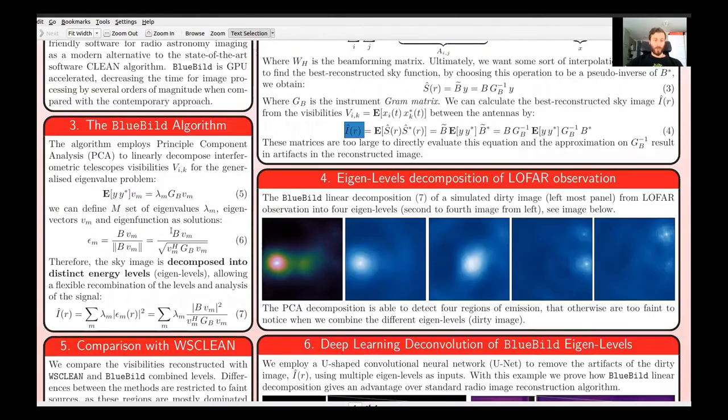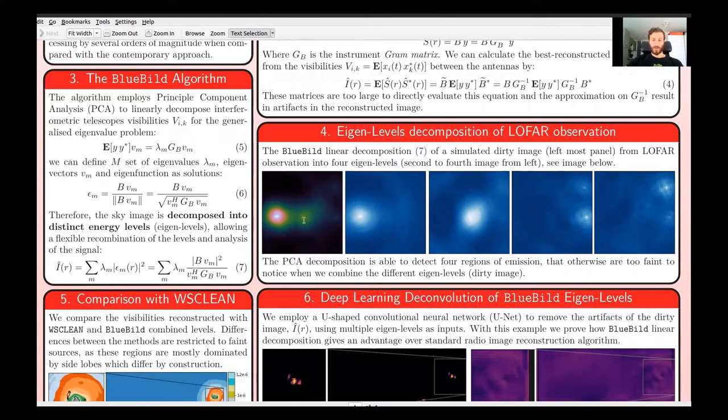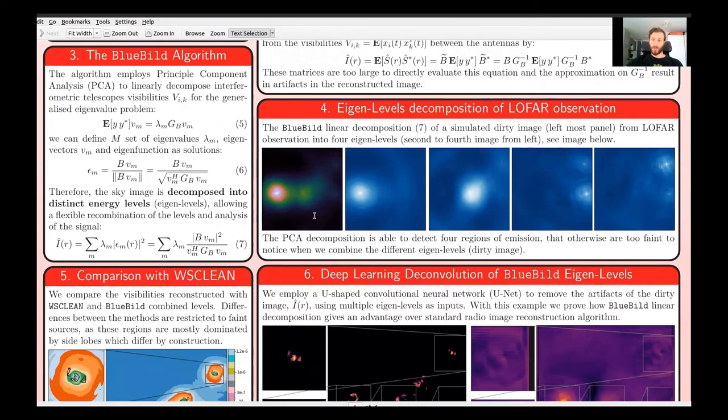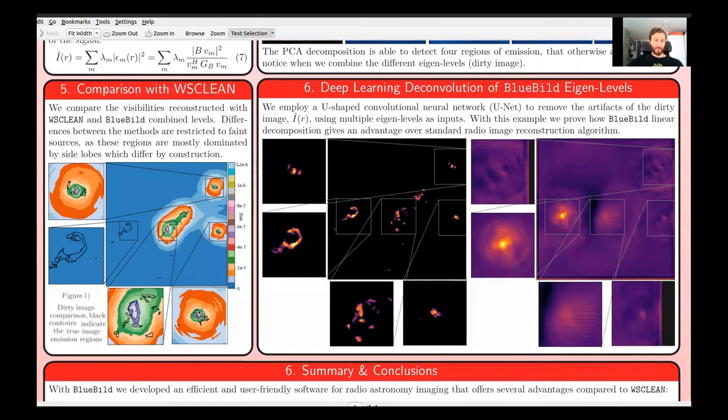Now we can apply principal component analysis where we basically linearly decompose the dirty image into eigenlevels. This is shown here as an example. Here we have, for example in blue, the four eigenlevels, and in colors the dirty image from a LOFAR observation. We compare this with state-of-the-art algorithms for radio interferometry imaging, and we have some good results.